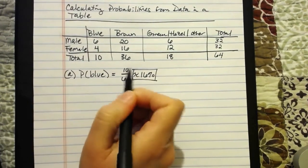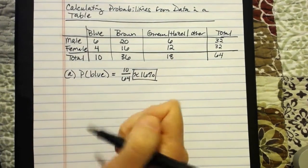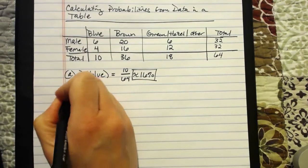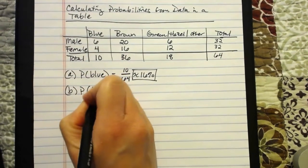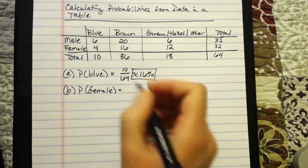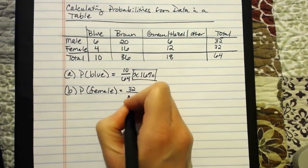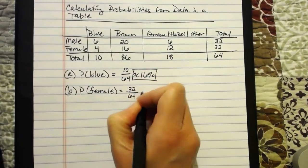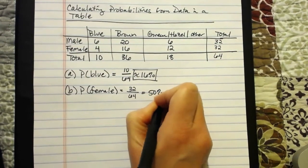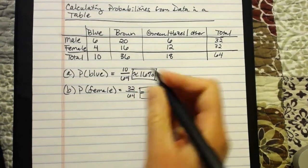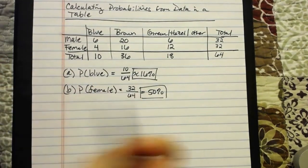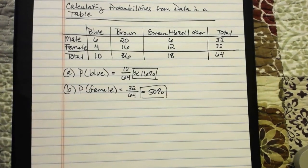If you were going to leave this in fraction form, you would want to reduce that. Part B: what's the probability of randomly selecting someone who is female? There are 32 females out of the 64 individuals, so that's a 50% chance. You could reduce this to one half, leave it as 0.5, or express it as 50%.